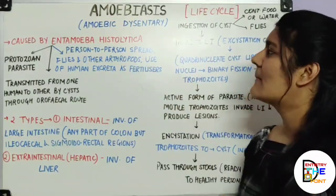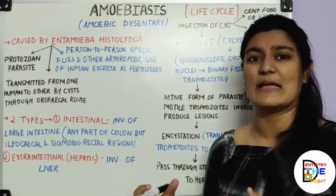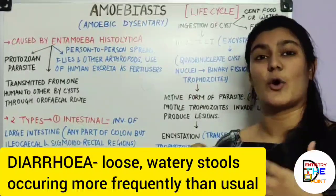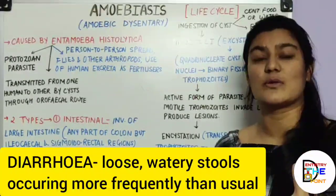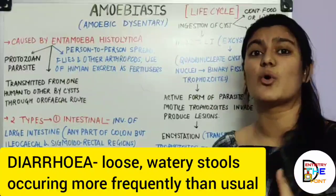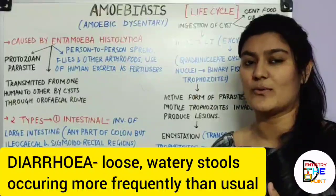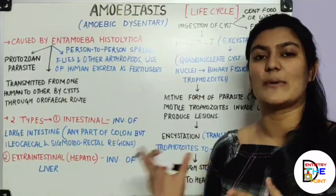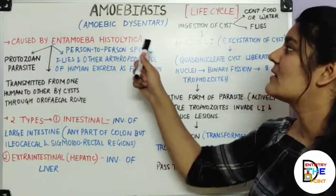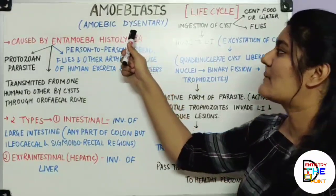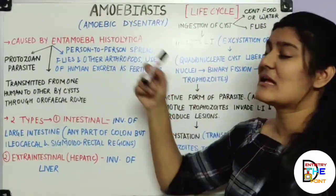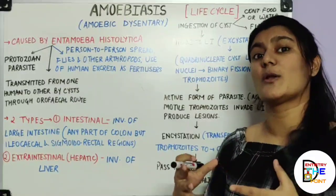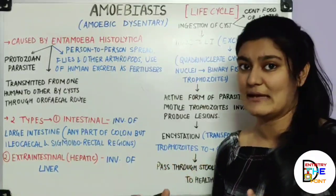Dysentery is nothing but infectious diarrhea, and diarrhea is nothing but watery, thin stools passed more frequently than normal. Diarrhea is a separate topic that will be dealt with separately. Here you just have to remember that it is the inflammation of the intestine that causes your blood-streaked diarrhea.